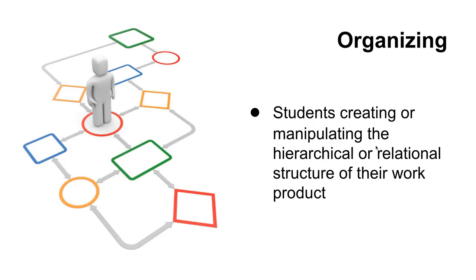From generation we move to organization — taking the initial content you've built up and starting to move it around and see what fits where. In your mind you might have an idea of how the video will lay out or where the content in a website will line up, but as you generate digital content and put things next to each other, sometimes they don't fit. This is the point in the process where you start to move things around — maybe this part of the video belongs after these other segments, or this part of the website should be in a different place. It's restructuring and manipulating the hierarchy of the work so it makes more sense for your task at hand.